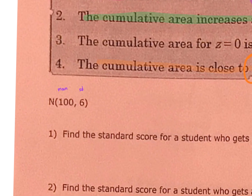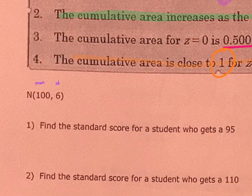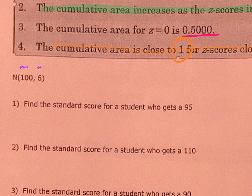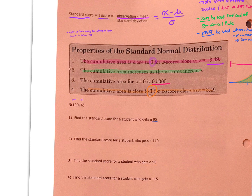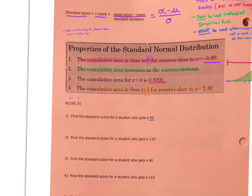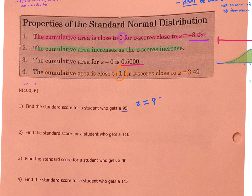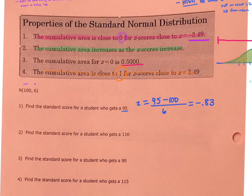By the notation, these examples have a mean of 100 and a standard deviation of 6. Find the standard score for a student who gets a 95. So 95 is our observation, and we want to figure out the z-score — where does that lie in comparison to this mean and standard deviation? To find our z-score: 95 minus 100, all over 6. We always write these as a decimal to two places, rounding as needed. In this case, z equals negative 0.83.